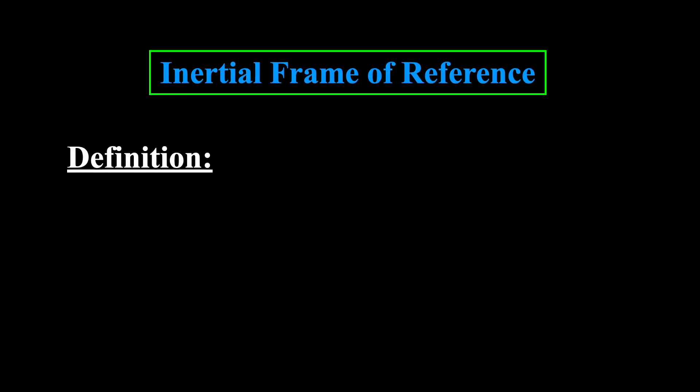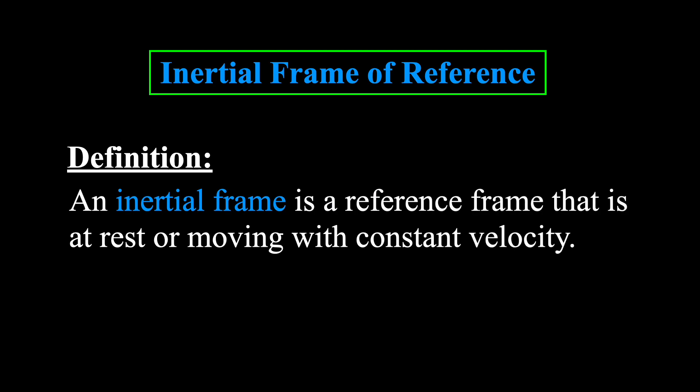A common definition that is used in textbooks is that an inertial frame is a reference frame that is at rest or moving with constant velocity. Now this definition might seem clear at first sight, but there's actually a surprisingly subtle difficulty with it. The difficulty arises when one asks a very simple question. What exactly do we mean here by something being at rest or moving?